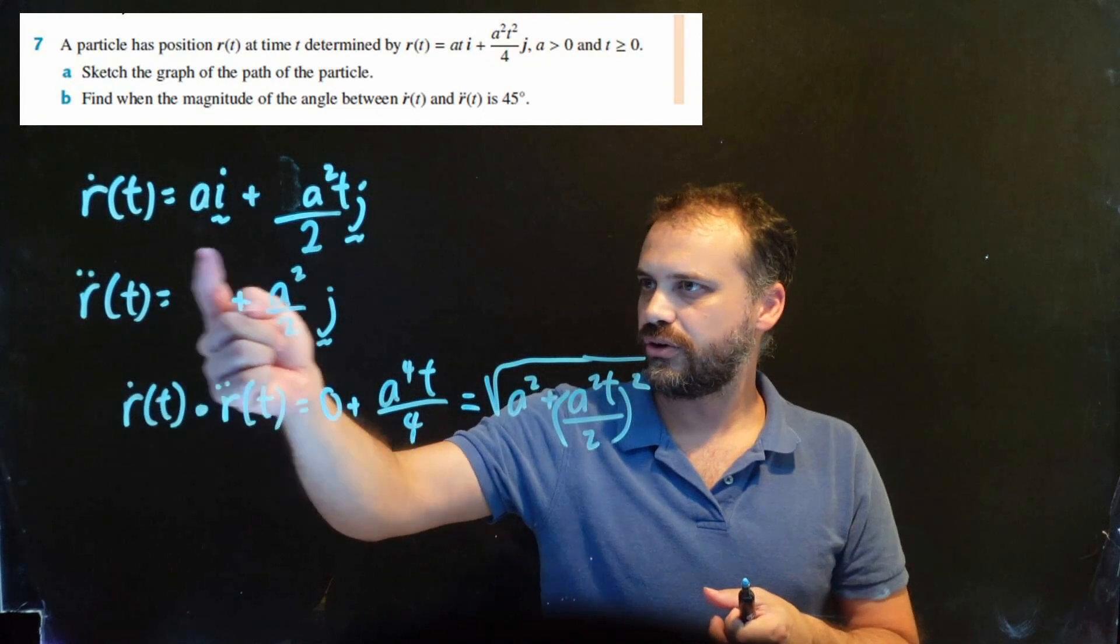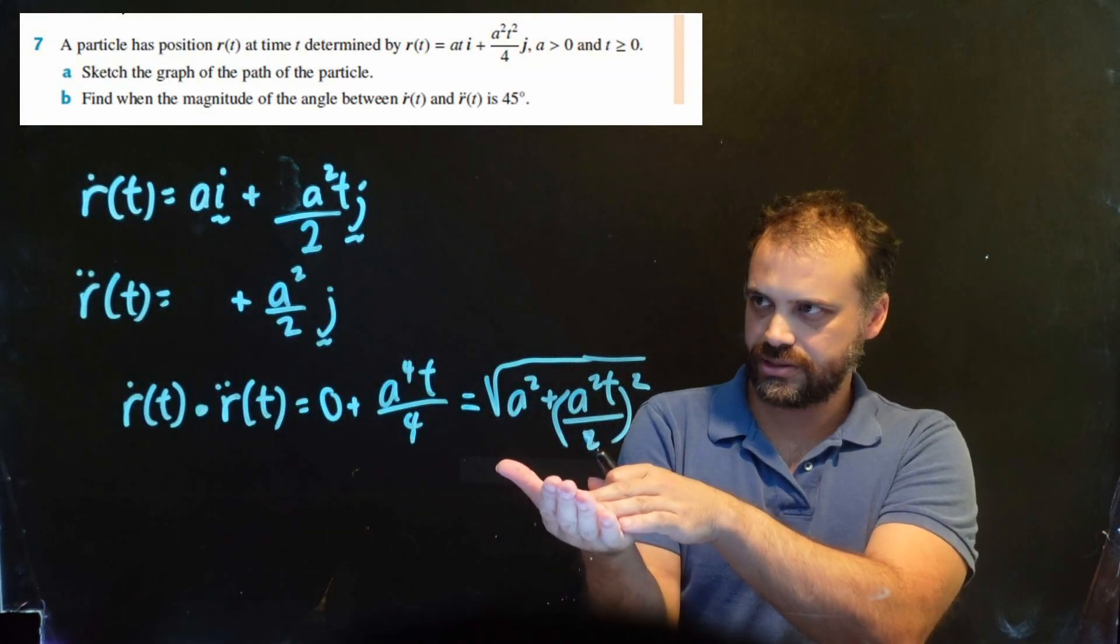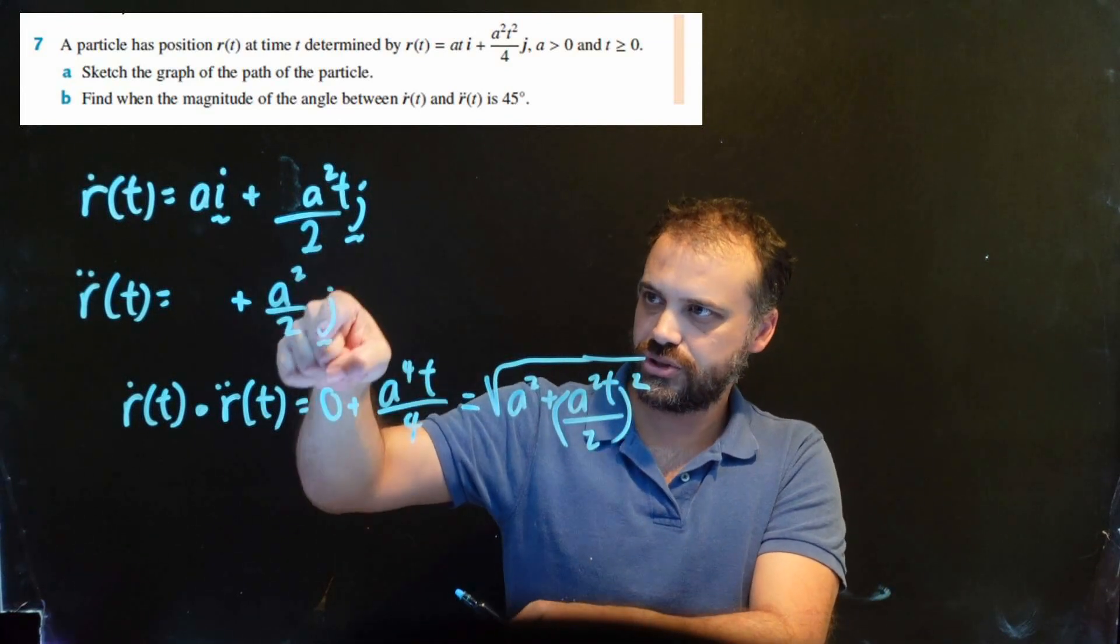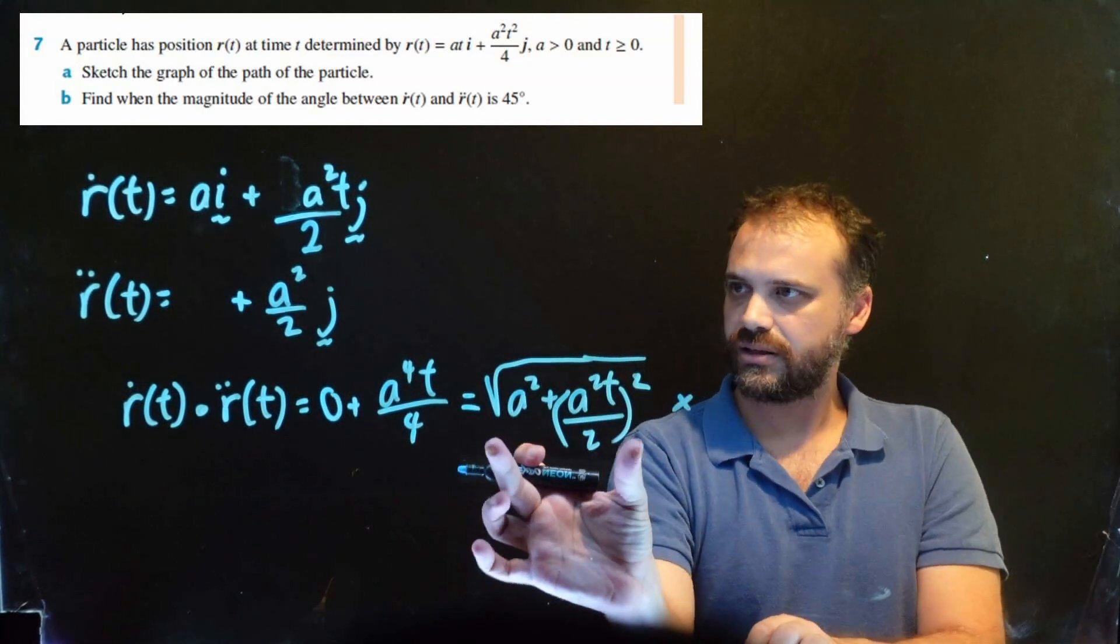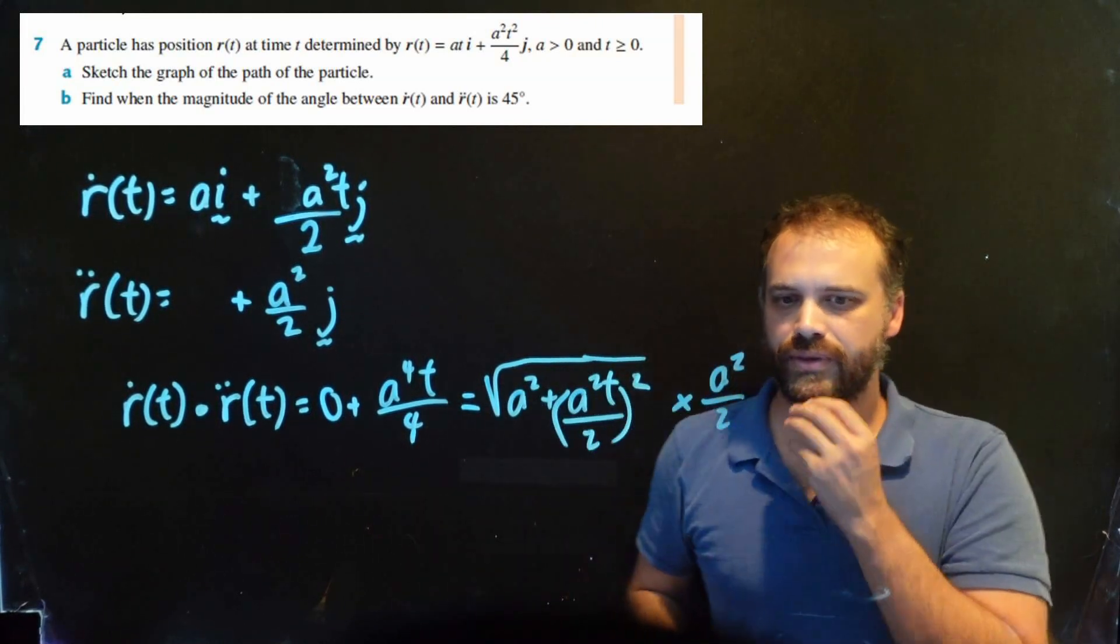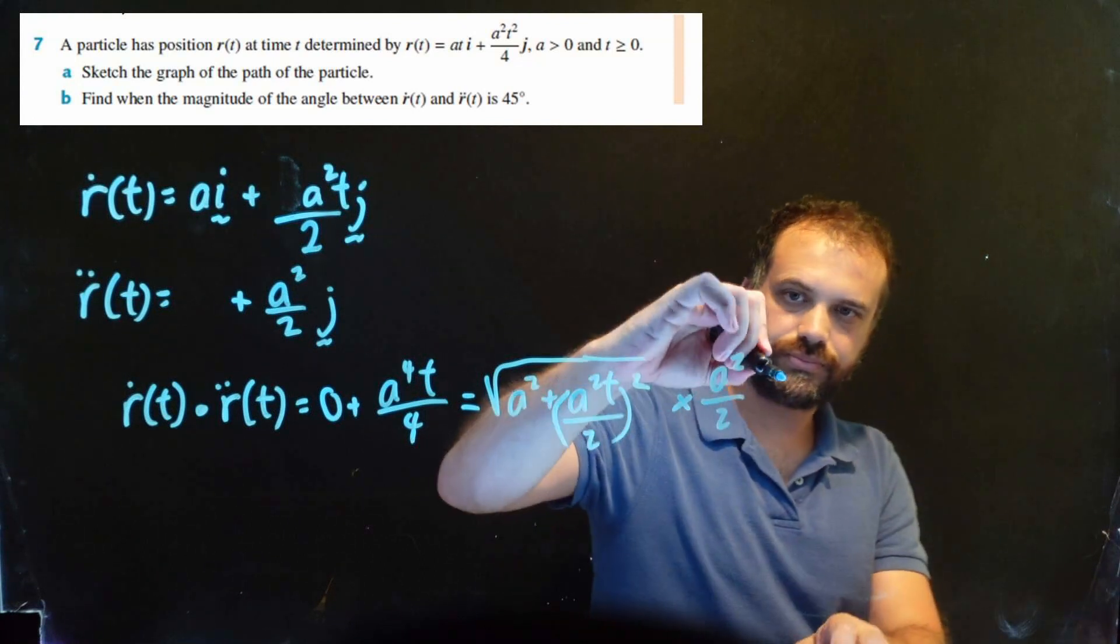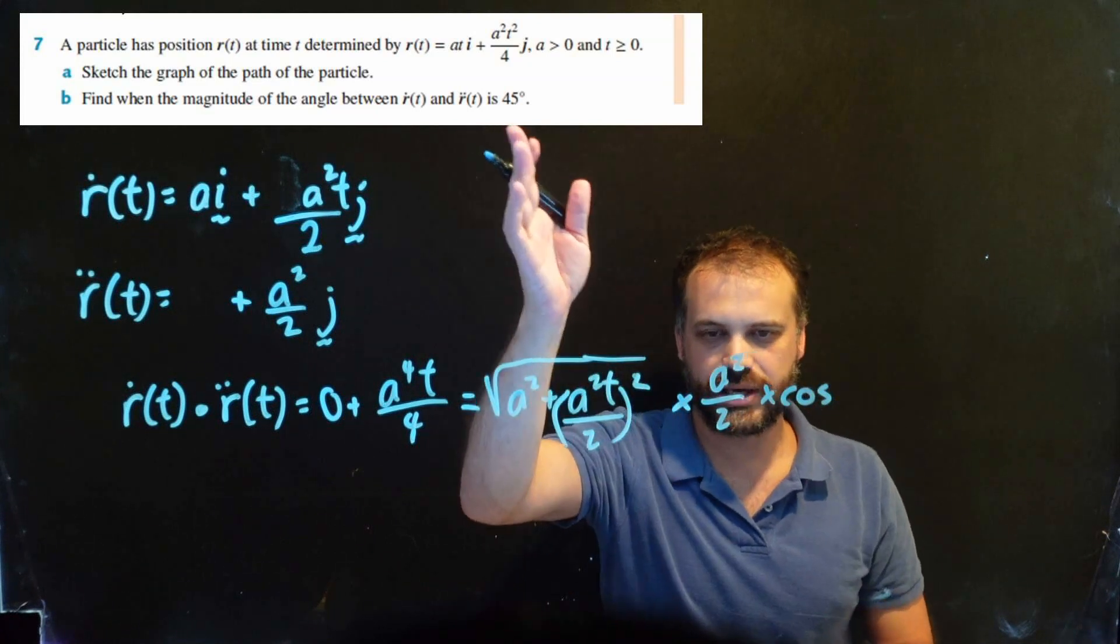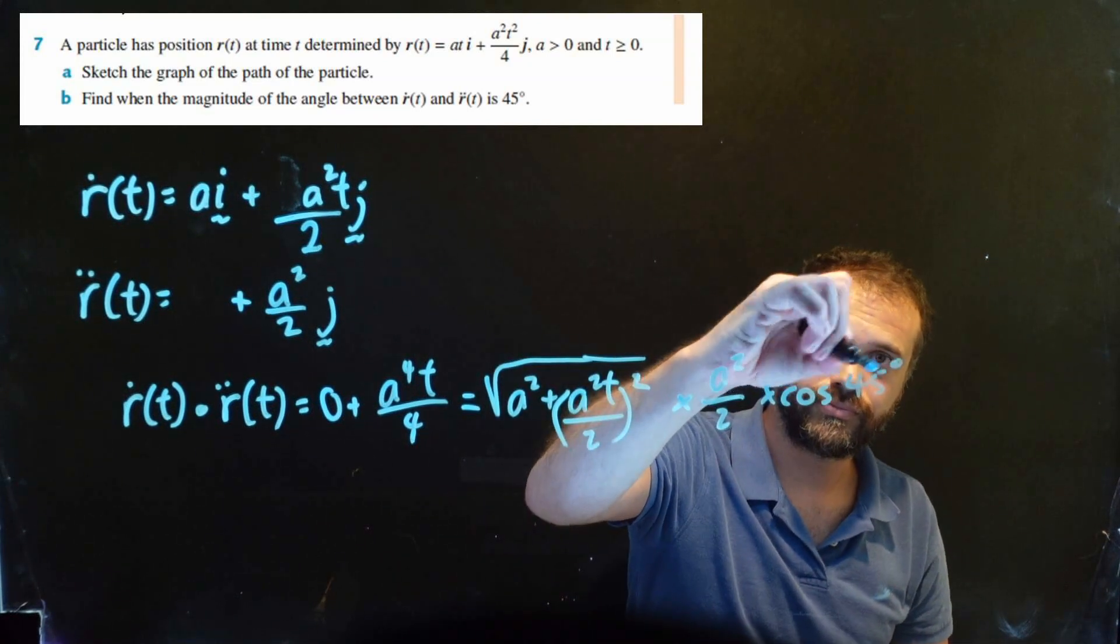What is the magnitude of this? Well, a lot of people will want to use another formula like this. But because it's purely in the j direction, it's just straight up, the magnitude is just whatever that is. So we're going to multiply all of that by a squared on 2. And our final step is to multiply it by cos the angle between them. Now, the angle between them, we want the angle between them to be 45 degrees.